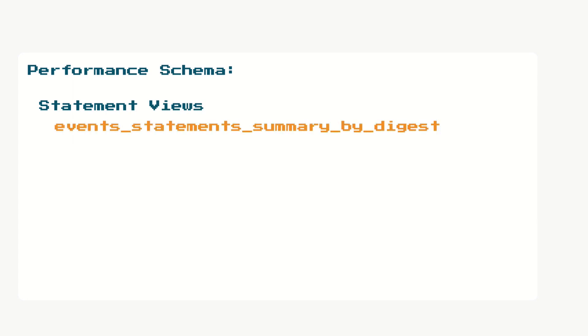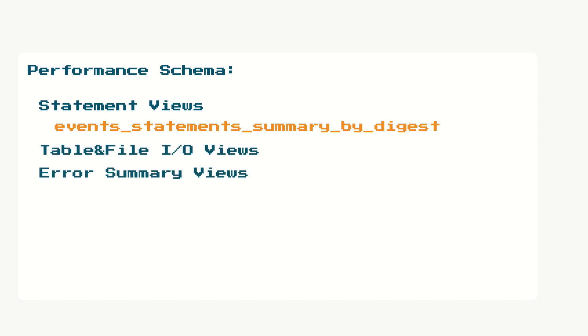We started this section by going through the performance schema and recognizing which information is available and most relevant. Particularly, event_statements_summary_by_digest is a goldmine when looking for queries that may have performance issues. However, we shouldn't restrict ourselves to just looking at queries — we should also take into consideration table and file I/O, as well as whether queries cause errors, which may include lock timeouts and deadlocks.